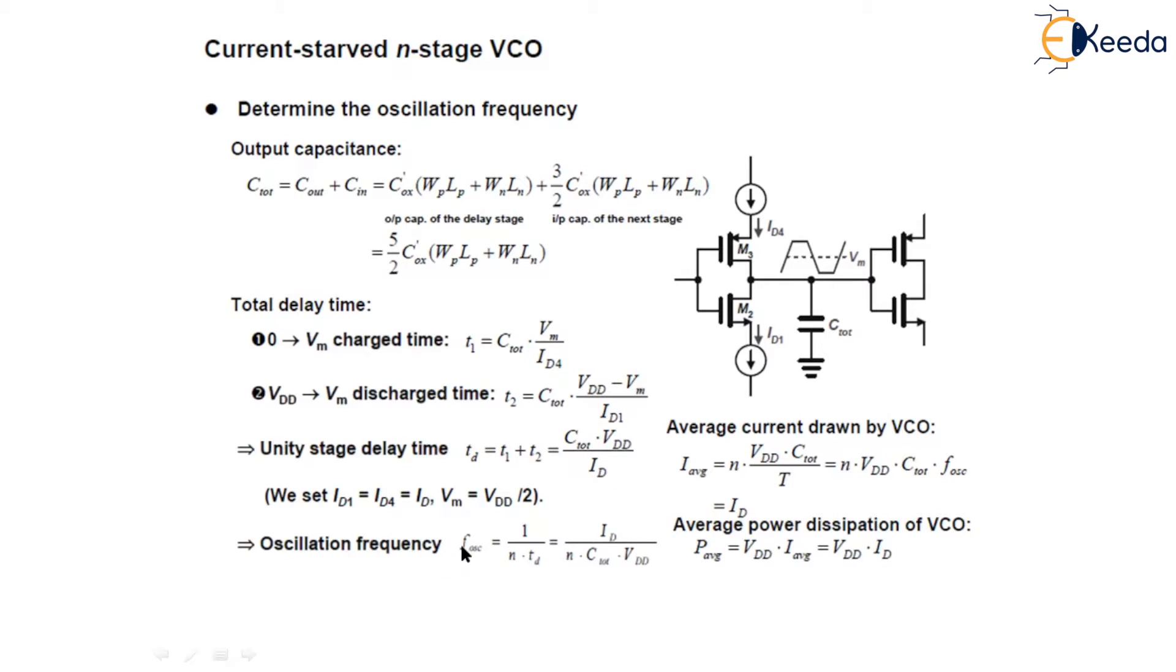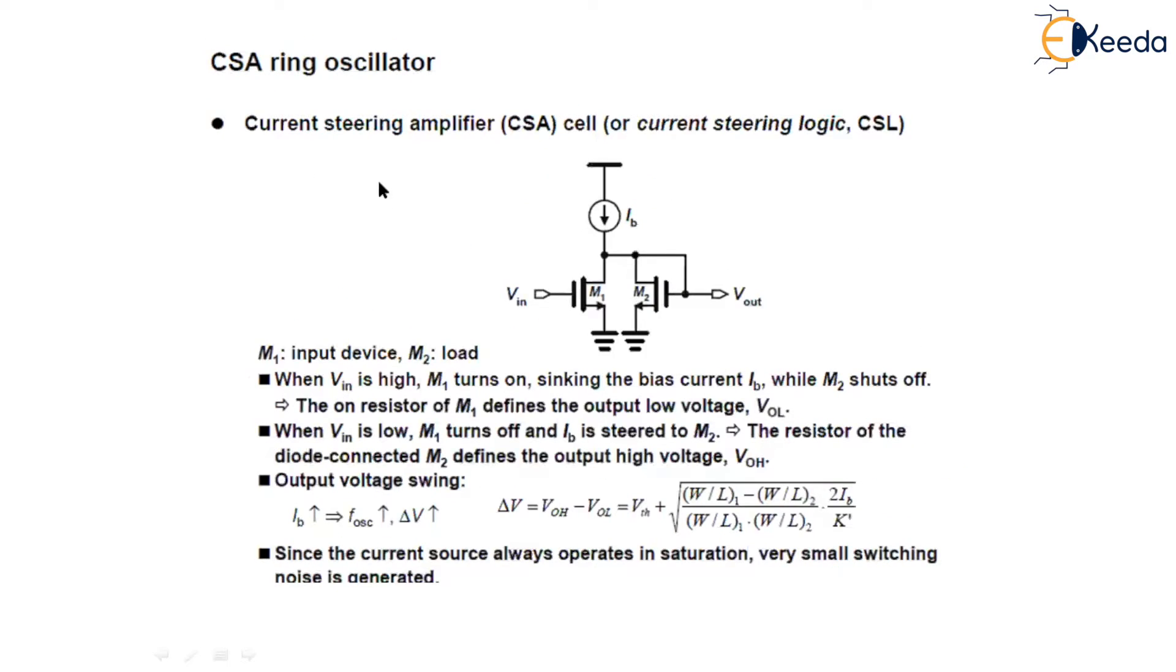The oscillation frequency is given as F_os equals 1 upon n T_d. Delay time can be given as I_D upon n C_total into V_dd from this equation of average current drawn by VCO. And the average power dissipation of VCO is given by P_average equals V_dd into I_average, which is equals to V_dd into I_d.